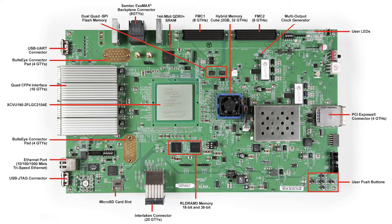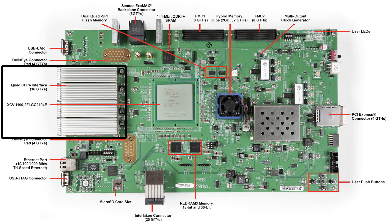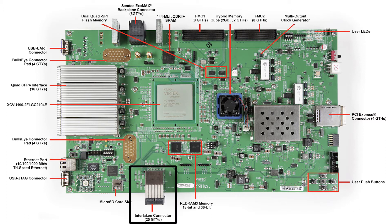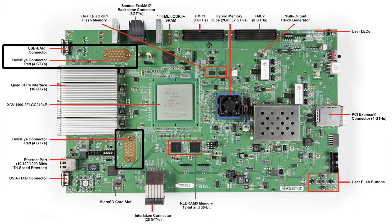The VCU-110 kit includes the VCU-110 board and an unprecedented set of high-speed 28 gigabit per second interfaces including quad CFP4 interfaces, 8-channel backplane interface, 20-lane interlocking chip-to-chip interface and dual 4-channel bullseye interfaces.